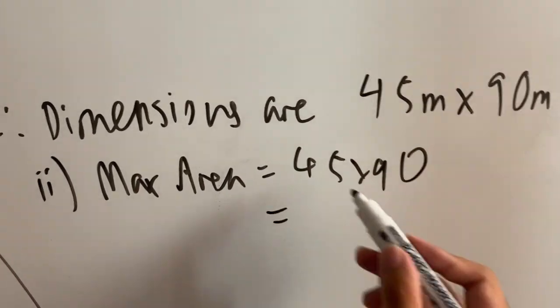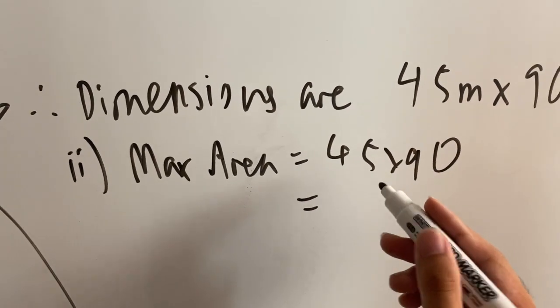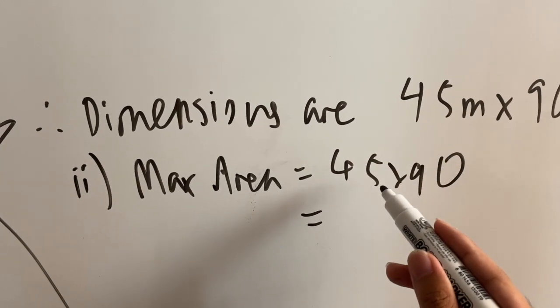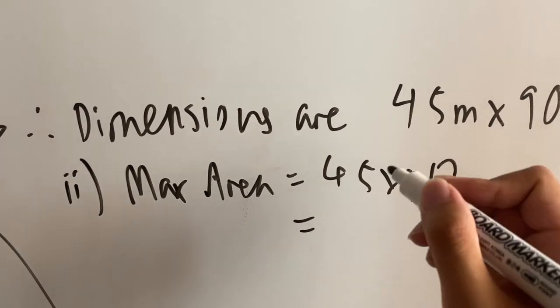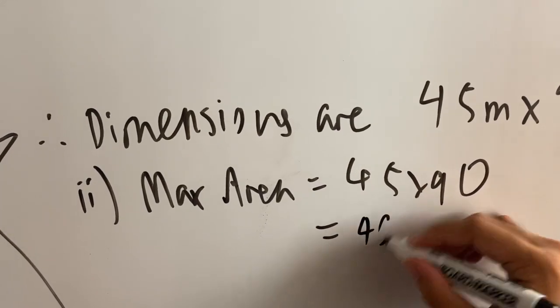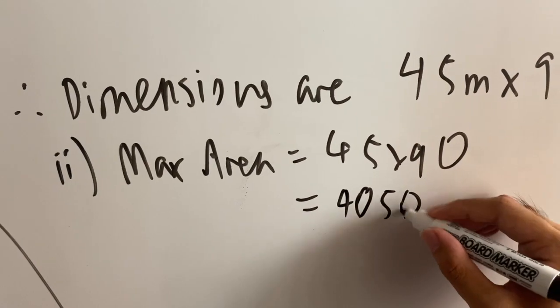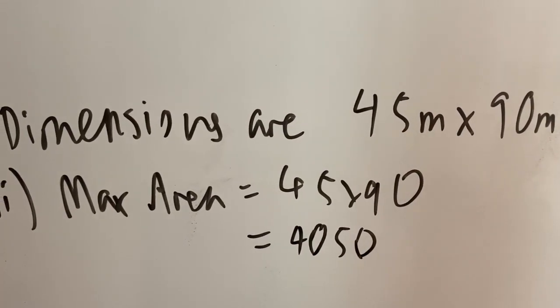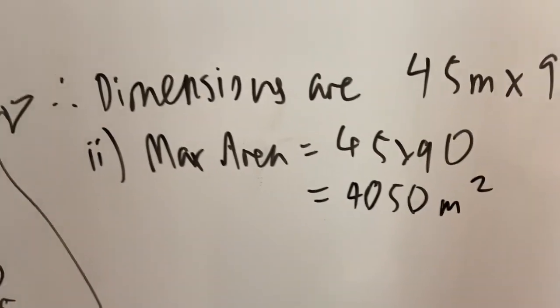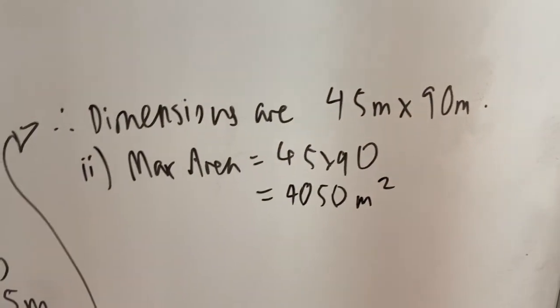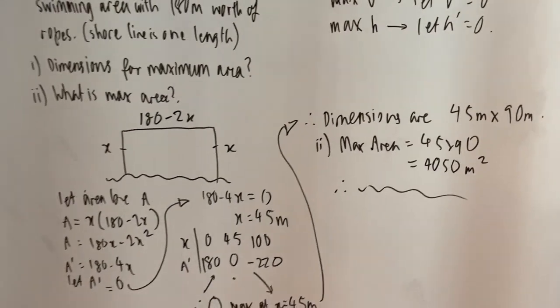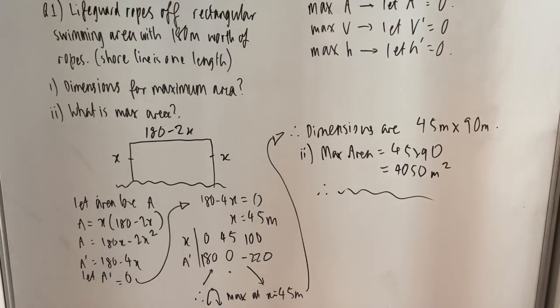So max area is going to equal to 45 times 90. And what's that going to equal to? That's 3600 plus 450. So 4050. And remember your units, it's going to be meters squared. And you're done with the question. If your teachers do want you to put concluding statements, please do that as well. And that will be helpful. So you don't get any marks docked off. But anyways, so that's the working out for this maximum question.